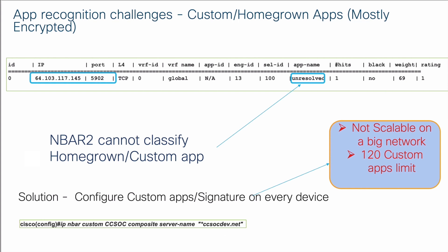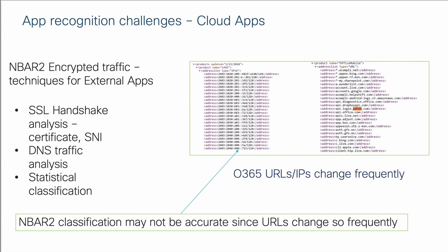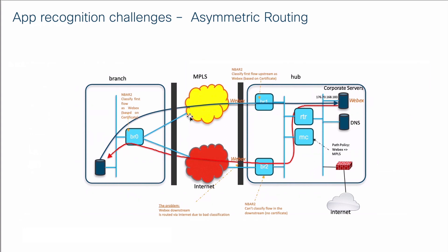Another challenge today is that everyone is aggressively adopting public cloud. Take O365 as an example: Microsoft publishes an RSS feed for all their applications. NBAR relies on deep packet inspection and analyzing SSL and DNS traffic, but the signatures may not remain valid if Microsoft keeps changing IP addresses and URLs. So you need a dynamic way to learn signatures that change consistently.